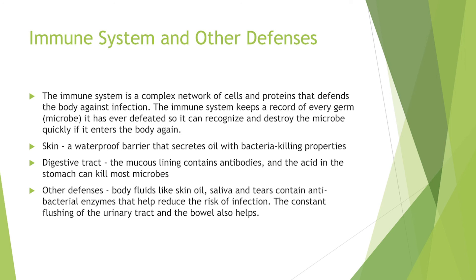The immune system is a complex network of cells and proteins that defends the body against infection. Your immune system will keep a record of every microbe that enters your body so it can defeat it if it comes back. Skin has a waterproof barrier that secretes oil with bacteria-killing properties, so intact skin will defend against most pathogens as long as you don't touch your eyes, mouth, nose, and other entrances to the respiratory system. In your digestive tract, the mucus lining and stomach acid will kill most microbes. Your body also has other defense mechanisms like saliva and tears containing antibacterial enzymes, and the constant flushing of the urinary tract and bowel also helps reduce the risk of infection.